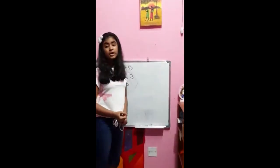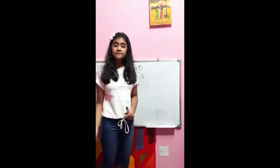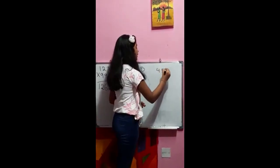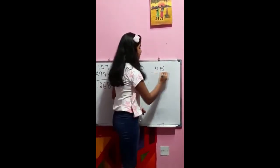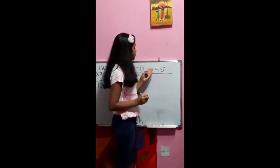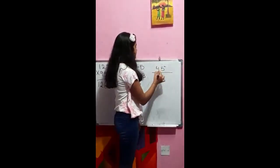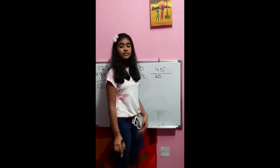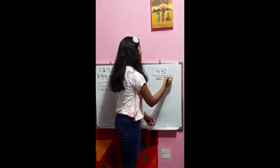Next, we've got squaring a number ending in 5. So let's pick 45 squared, and this is only two digits. You multiply 4 by a number that is greater than it by 1 — that's 4 times 5, which is 20. And then it will always end in 25 because there's a 5 there, so it's 25. The answer is 2025.